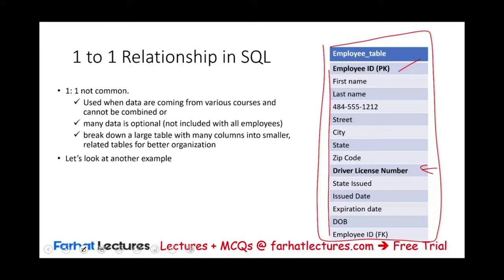So when can we use a one-to-one relationship? We can use it when data is coming from various sources and cannot easily be combined. Or when some data is optional — for example, when certain data exists for some employees but not others; in that case, the optional data is kept in a separate table. Another reason is when a table is very large; we might break it down and put the driver's license as a separate, smaller, better-organized table.